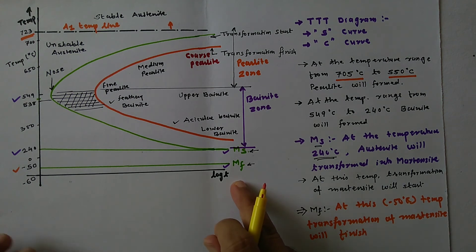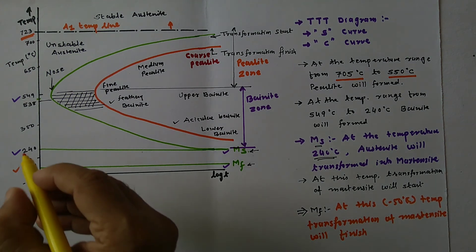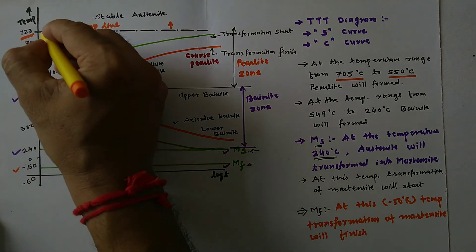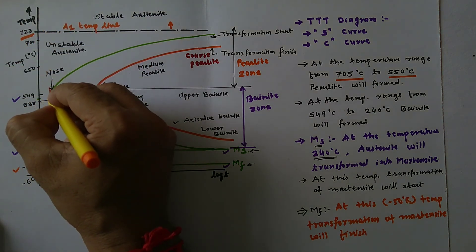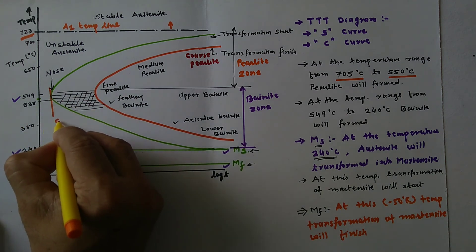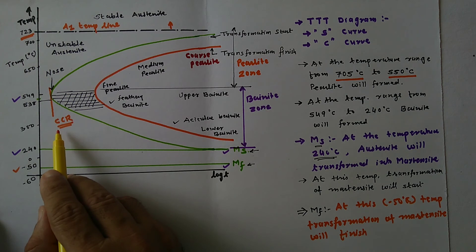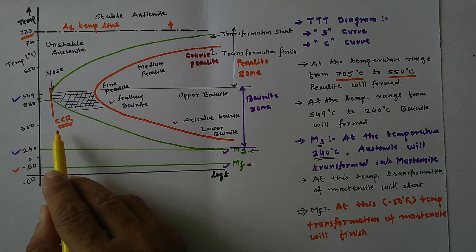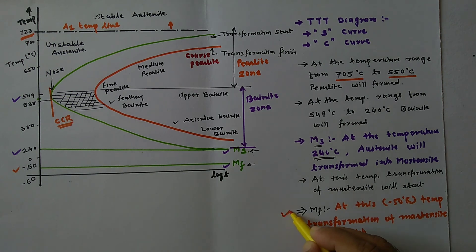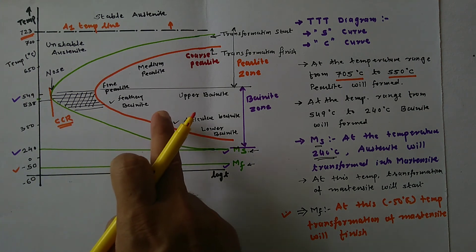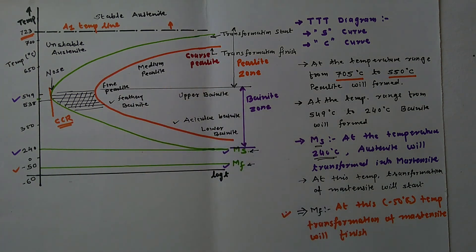The nose of the C-curve defines the CCR — Critical Cooling Rate. If the cooling rate is equal to or higher than the CCR, then martensite will form. If the cooling rate is slower than the CCR, then softer structures like pearlite and bainite will form.